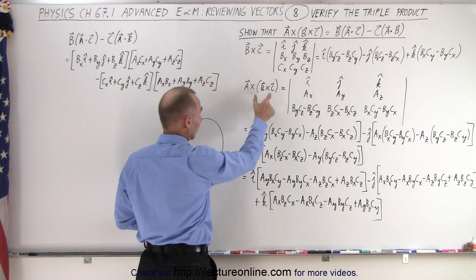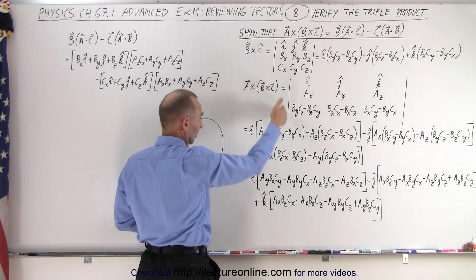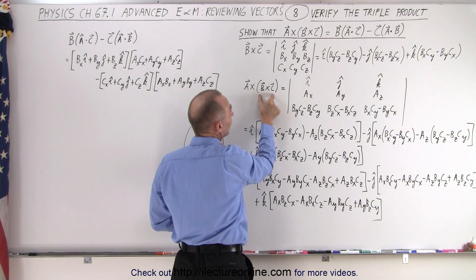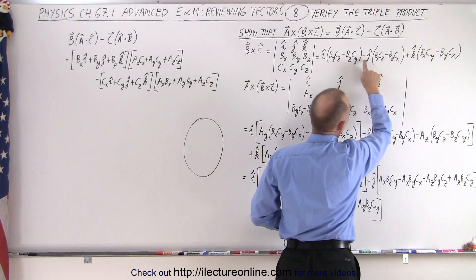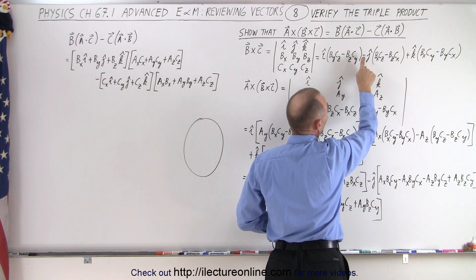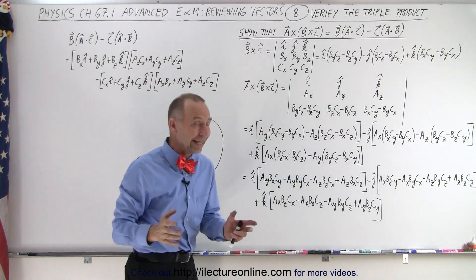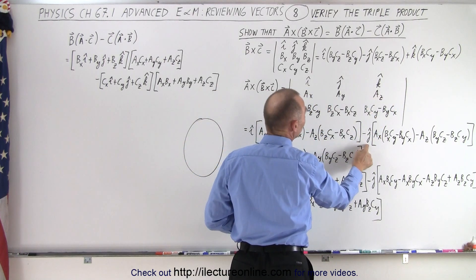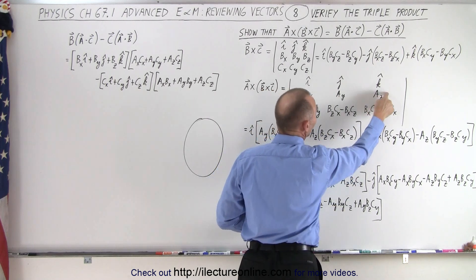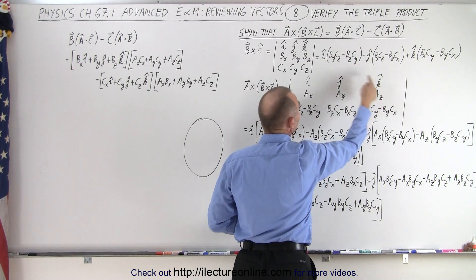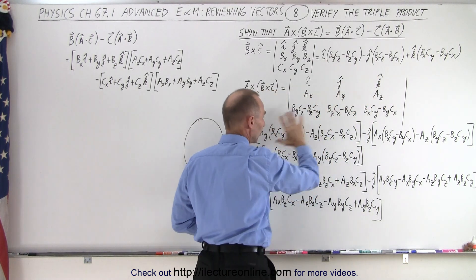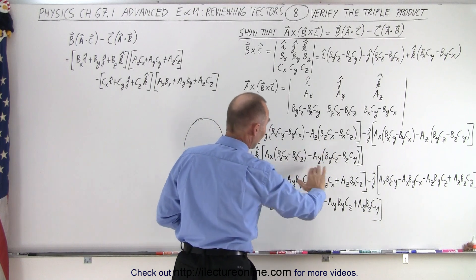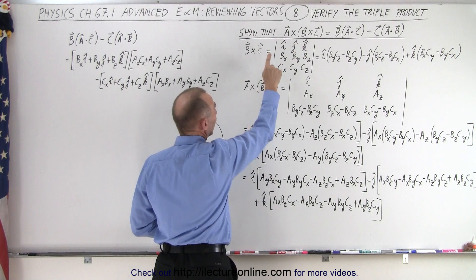Next we take A cross that vector product. We set up another determinant with I, J, K in the first row, the X, Y, Z components of A in the second row, and the X, Y, Z components of B cross C in the third row. We expand this out, taking I times (AY times this minus AZ times this), minus J times (AX times this minus AZ times this), plus K times (AX times this minus AY times this). When we multiply everything out, that gives us the full expansion of the left side, A cross B cross C.